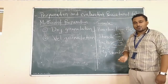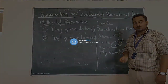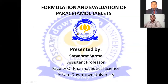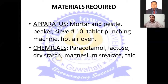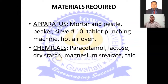We are starting with the direct compression method to discuss the formulation and evaluation of paracetamol tablets. For the materials required: mortar and pestle, beaker, sieve number 10 or 40, tablet punching machine, and hot air oven. Chemicals required include paracetamol, lactose, dry starch, magnesium stearate, talc, etc.